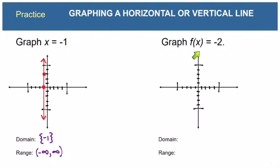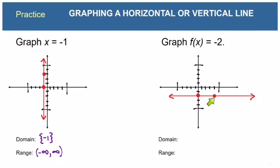Now let's graph f(x) equals negative 2. Remember that f(x) doubles as notation for y, so every point has a y value of negative 2. We can plot (0, negative 2) and (4, negative 2), which forms a horizontal line. The domain is negative infinity to positive infinity, and the range is just the single number negative 2.